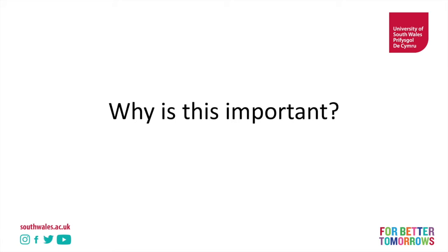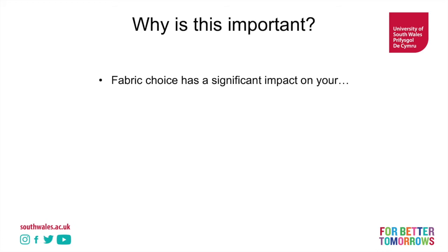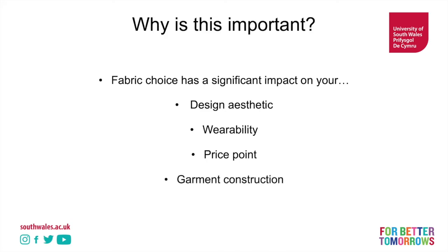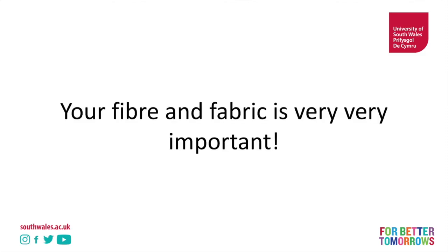But why is this important for us as fashion designers? Fabric choice has a significant impact on your design aesthetic — a fabric with more drape will be softer than one with less drape. Wearability: a fabric made from polyester fibre will be hotter than one made from cotton. Price point: polyester is very cheap to produce while silk is very expensive. Garment construction: a plain weave cotton is significantly easier to work with than a sateen woven silk. And usability: something like merino wool can be difficult to launder. Your fibre and fabric choices are very important, and it's vital that you educate yourself, upskill, and make an informed choice.